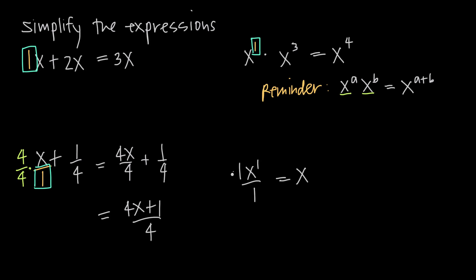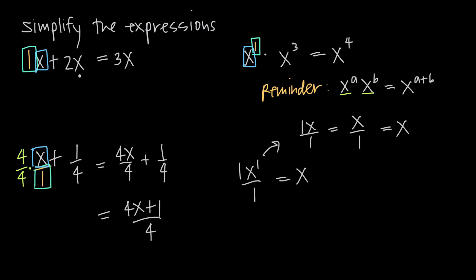That should make sense because if we process this using order of operations, we do the exponent first: x to the first power is just x, giving us 1x over 1. Then we do multiplication in the numerator: 1 times x is just x, so we have x over 1. Then division: x divided by 1 is just x. So 1x to the first power all divided by 1 is just x. When we see just x, it's not only x — it actually has a coefficient of 1, an exponent of 1, and a denominator of 1, and we can apply whichever we need.